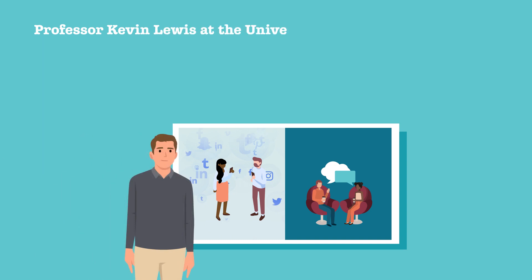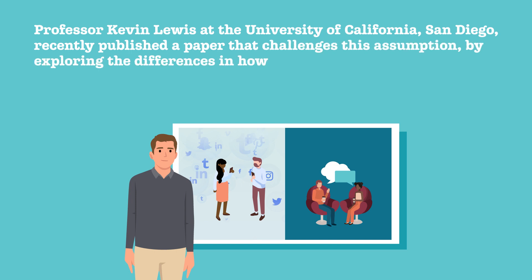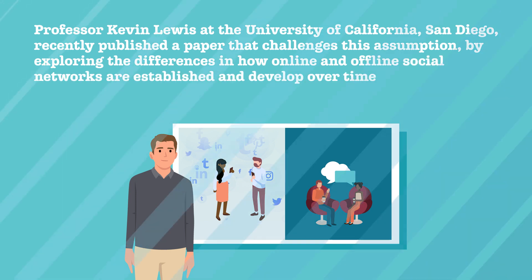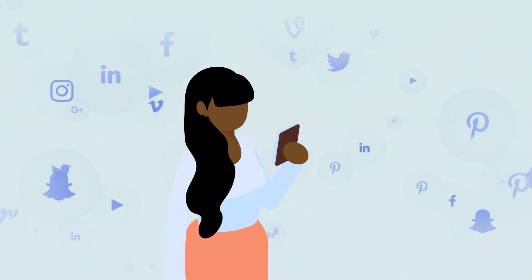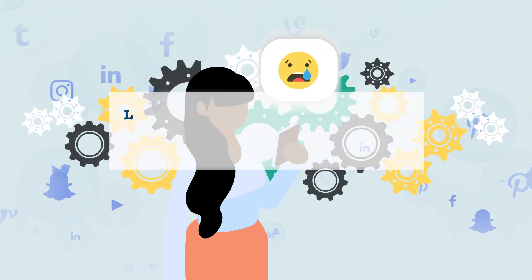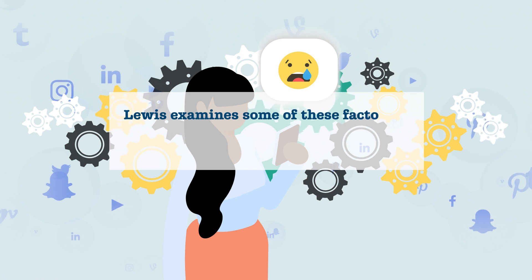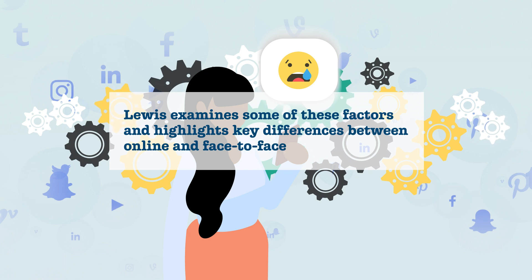Professor Kevin Lewis at the University of California, San Diego, recently published a paper that challenges this assumption by exploring the differences in how online and offline social networks are established and develop over time. Most available data related to online social networks offers insight about users' behavior rather than the many factors influencing this behavior. In his paper, Lewis examines some of these factors and highlights key differences between online and face-to-face interactions.